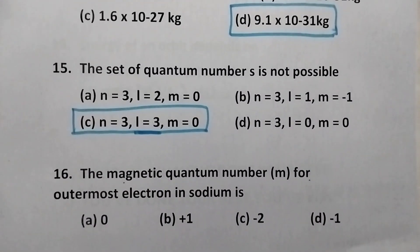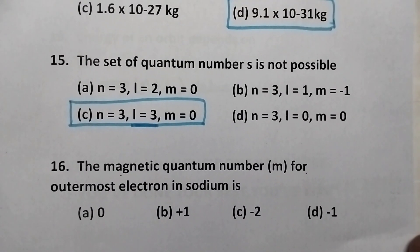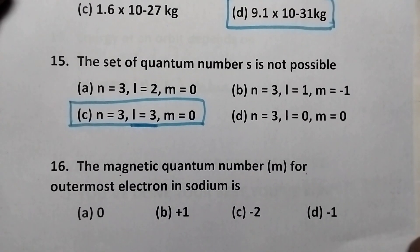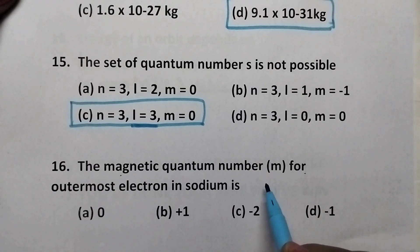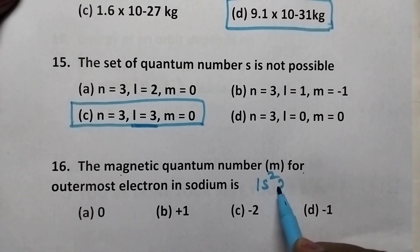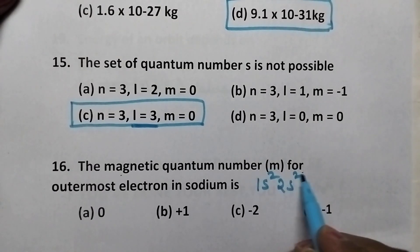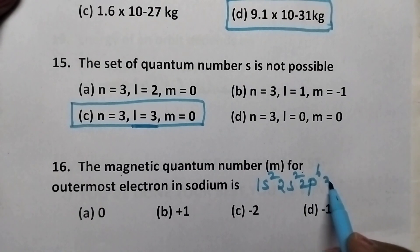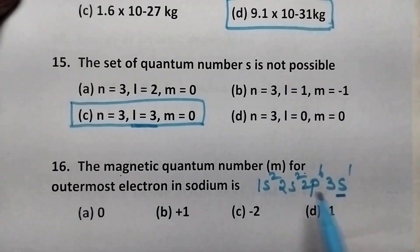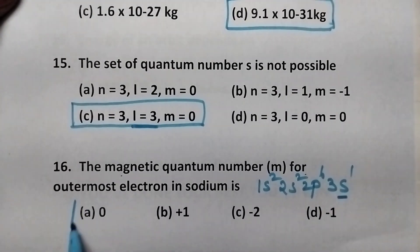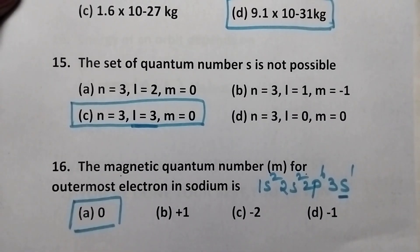The magnetic quantum number for the outermost electron in sodium is — sodium atomic number is 11 and its configuration is 1s2, 2s2, 2p6, 3s1. So it is an S orbital. For S orbital, L is equal to 0 and hence M is also equal to 0. Option A is the right answer.